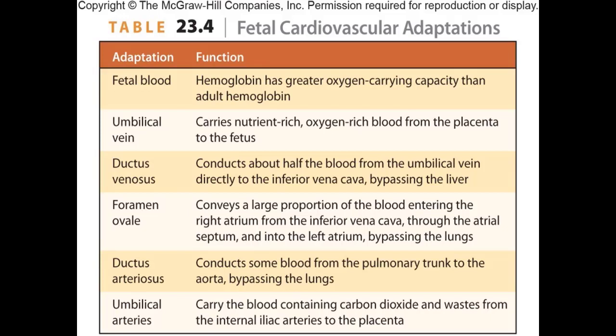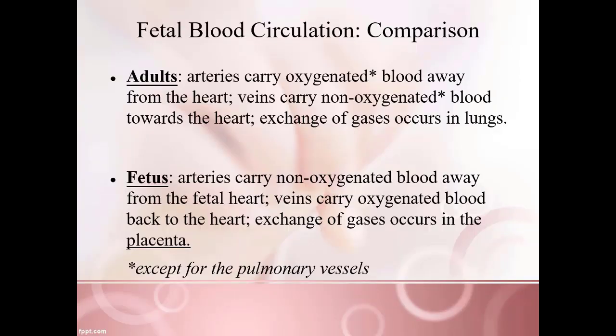A table summarizes the adaptations of fetal blood circulation and their main functions — a good resource for flashcards covering umbilical vessels, ductus venosus, ductus arteriosus, and so on. There is also a comparison between fetal and adult circulation. For adults, arteries generally carry oxygenated blood away from the heart and veins carry non-oxygenated blood, with the lungs as the site of gas exchange. In a fetus, arteries carry non-oxygenated blood away from the fetal heart, the umbilical vein carries oxygenated blood back, and gas exchange occurs in the placenta — not the lungs, because the lungs aren't formed yet.